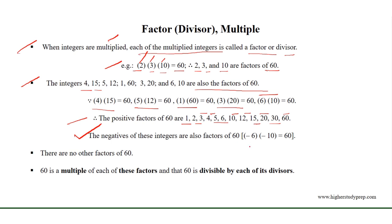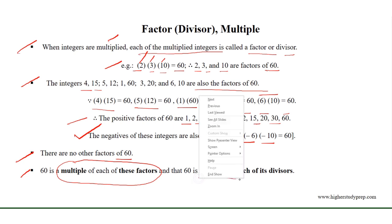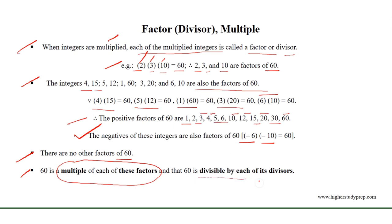For example, minus 6 times minus 10 is equal to 60 as well. There are no other factors of 60. Thus, 60 is a multiple of each of these factors, and 60 is divisible by each of its divisors.